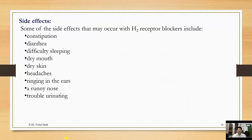Side effects that may occur with H2 receptor blockers include constipation, diarrhea, difficulty sleeping, dry mouth, dry skin, headache, ringing in the ears, a runny nose, and trouble urinating. This concludes the discussion on H2 blockers, their mode of action, and side effects.